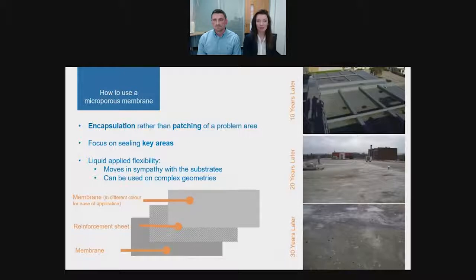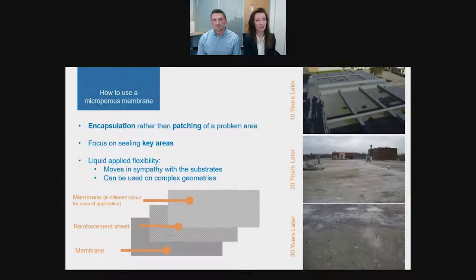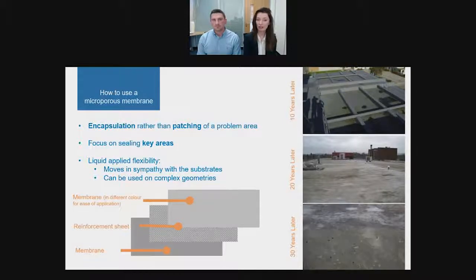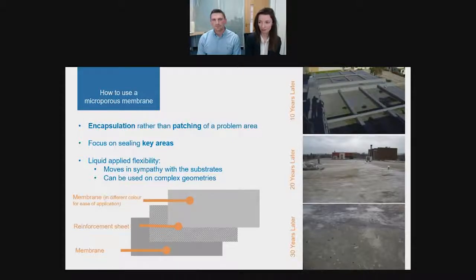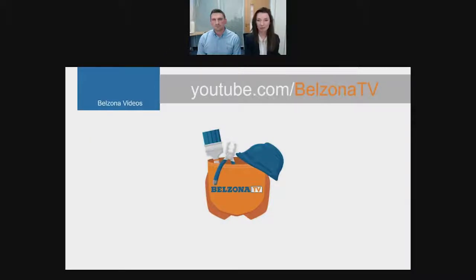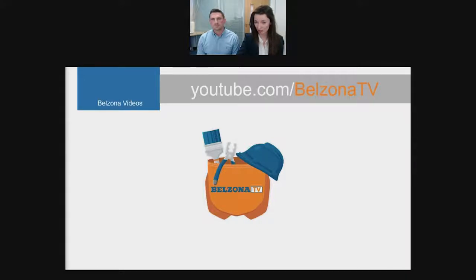So now we've spoken about what microporous membranes do, let's look at how they work. Fundamentally, you use a membrane to encapsulate a problem area — sealing and protecting it rather than just patching it up. Because these membranes are liquid applied, you can use them on even complex geometries. Thanks to the reinforcement sheet, they are able to flex with the substrate beneath. Rather than just telling you how to apply it, we're going to go to Belzona TV where Ian will walk us through a live application demonstration.